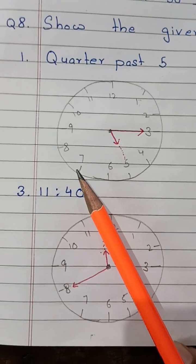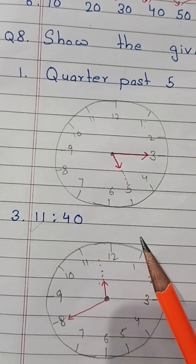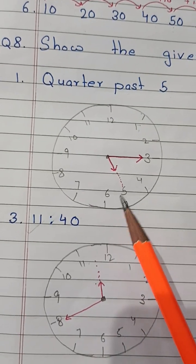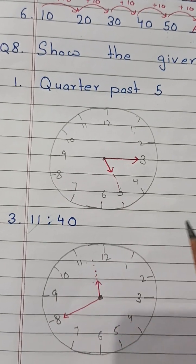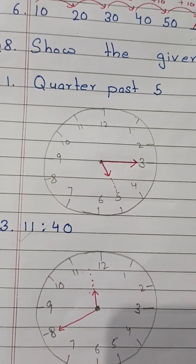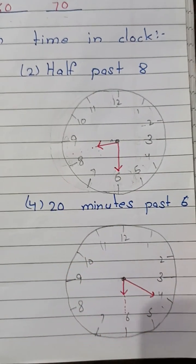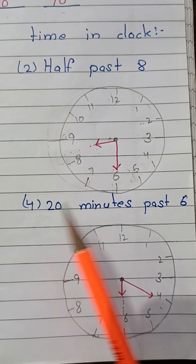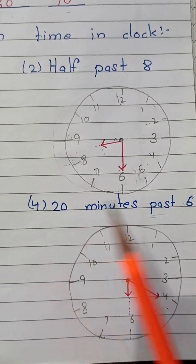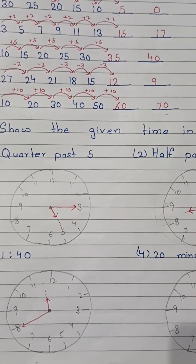Third question: 11:40. Here the time is already given to you. 11 means the hour hand will be between 11 and 12, as it is after half past and the hour hand moves continuously. So for 11:40, the hour hand is between 11 and 12 and the minute hand is on 8. Next, 20 minutes past 6 — the hour hand will be on 6 and the minute hand will be on 4, because it is 20 minutes past 6. As shown, you position the hour hand and minute hand to show the time.